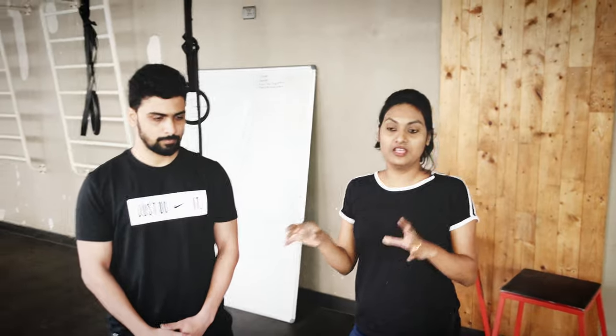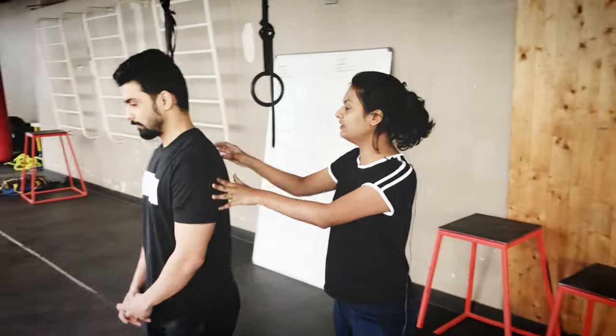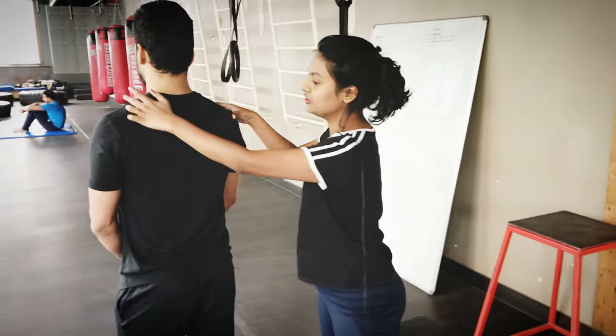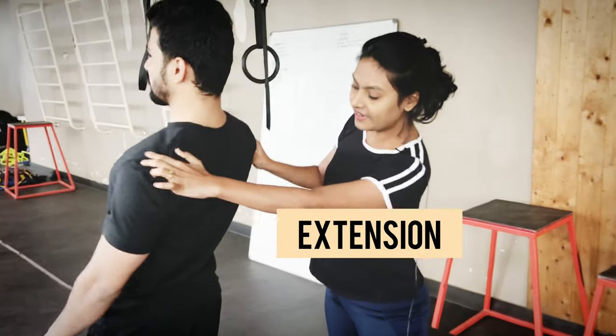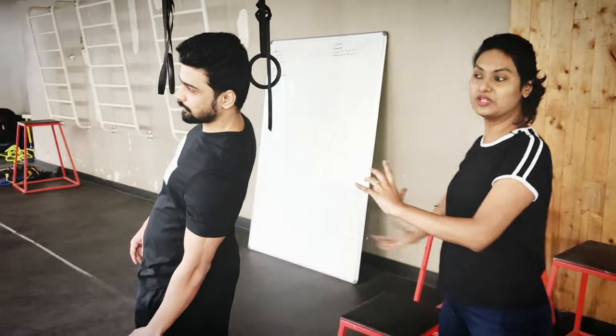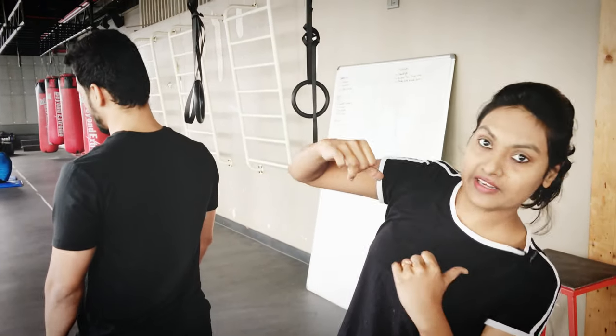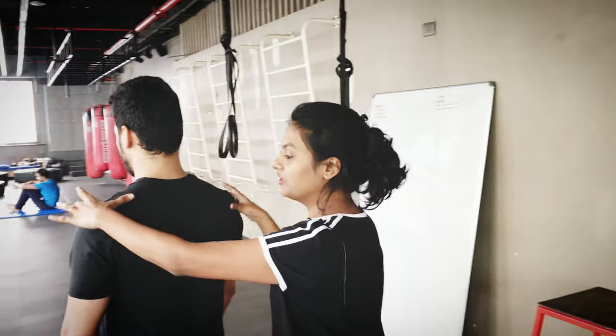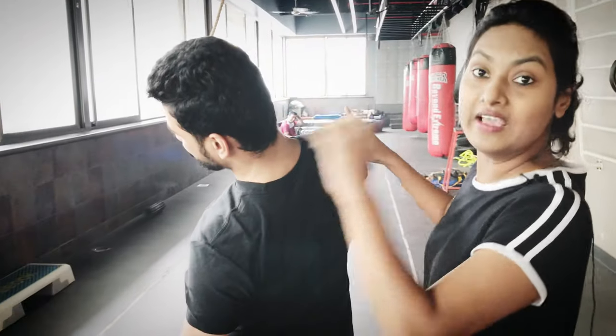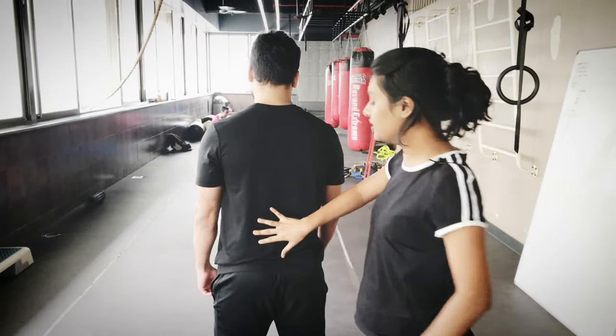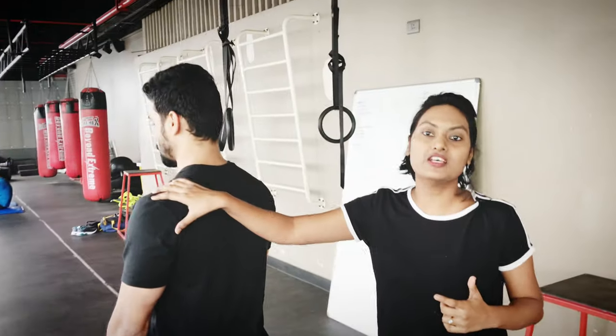For a right-handed fast bowler, the back pain or injury will be most common in the left lower lumbar region. To check why your fast bowler is having an injury, you need to do a quick assessment: ask the athlete to go into extension and lateral rotation. Because when they get into the ball release phase, they are in extension and lateral rotation. If that movement gives the bowler pain, it confirms the pain is due to the recurrent fast bowling movement.